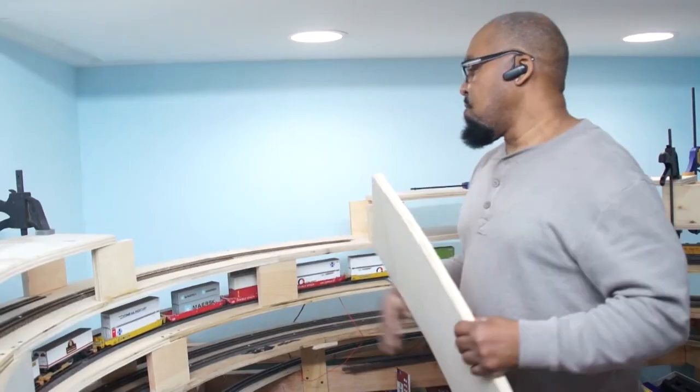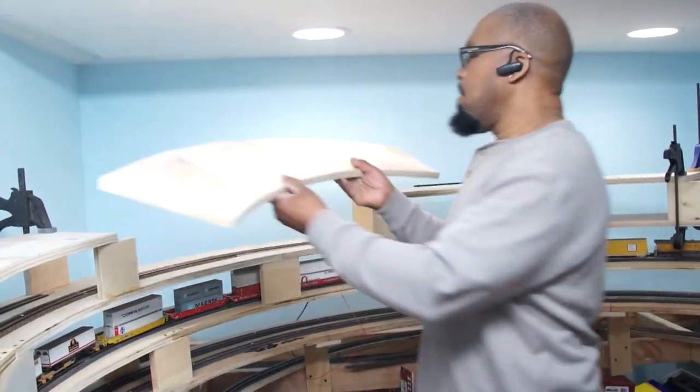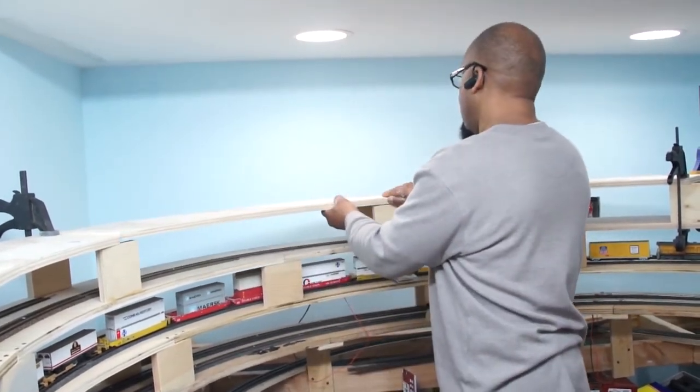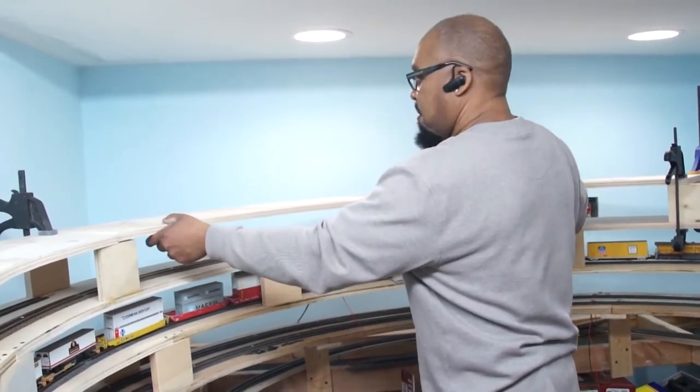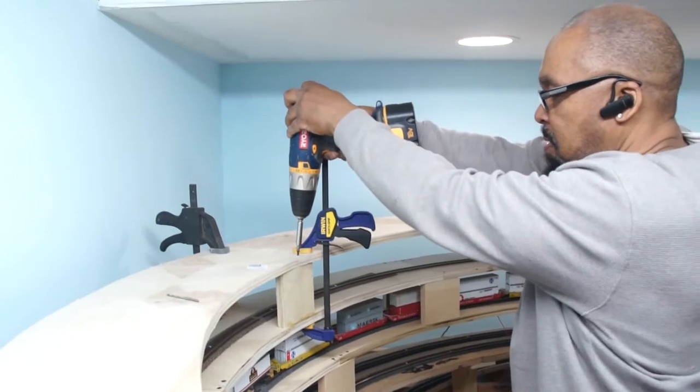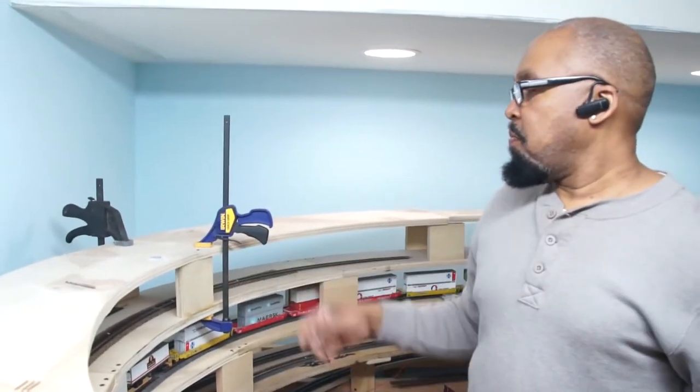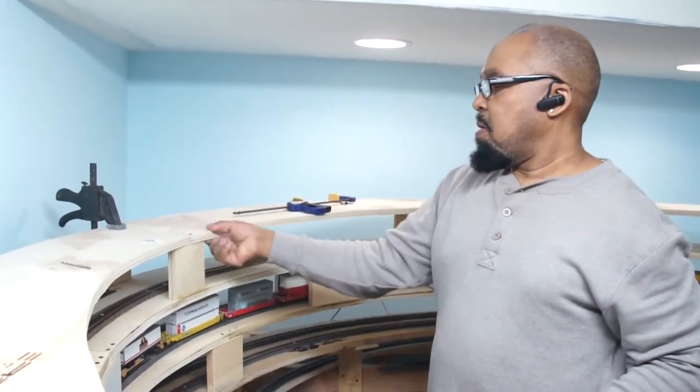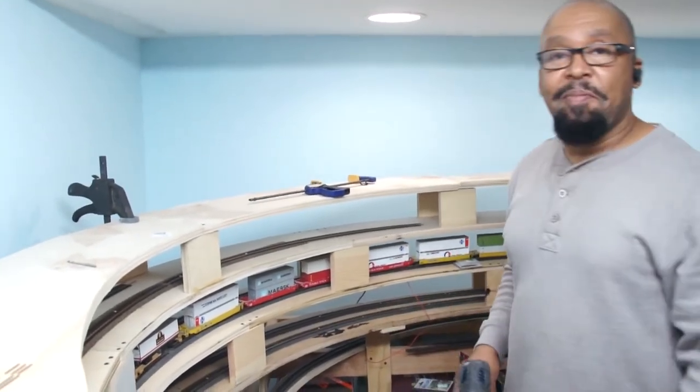Once that's done and your roadbed is down, then you will simply pop that in. And then you need a little adjustment. And that's it. You take your clamp off and it's done.